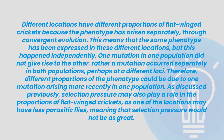Notice how there are two factors — genetic and environmental — both at play affecting the phenotype. Let's explain why different locations may present with different proportions of cricket-winged phenotypes. Different locations have different proportions of flat-winged crickets because the phenotype has arisen separately through convergent evolution. This means that the same phenotype has been expressed in these different locations, but has happened independently. One mutation in one population did not give rise to the other; rather, a mutation occurred separately in both populations, perhaps at a different loci. Therefore, different proportions of the phenotype could be due to one mutation arising more recently in one population. Selection pressure may also play a role in the proportions of flat-winged crickets, as one of the locations may have less parasitic flies, meaning that selection pressure would not be as great.